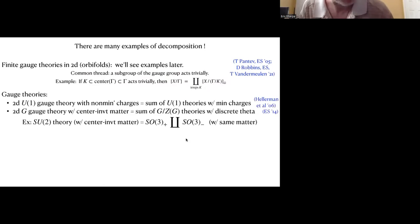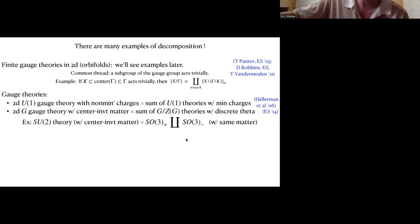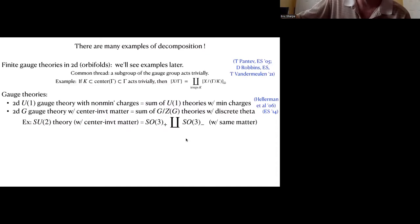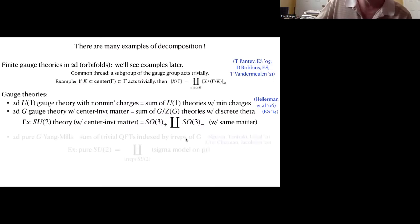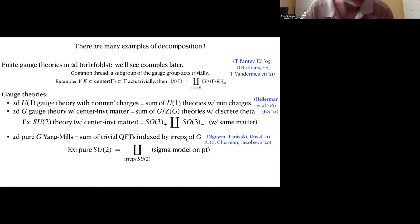Other examples: gauge theories. A two-dimensional abelian gauge theory with non-minimal charges is the same as a sum of abelian gauge theories with minimal charges. More generally, a two-dimensional G gauge theory, where G might be non-abelian, but with center-invariant matter, is a sum of G mod center theories with discrete theta angles and the same matter. For example, an SU(2) theory in two dimensions with center-invariant matter is a sum of a pair of SO(3) theories, where the plus and minus label choices of discrete theta angles in those two SO(3) gauge theories.